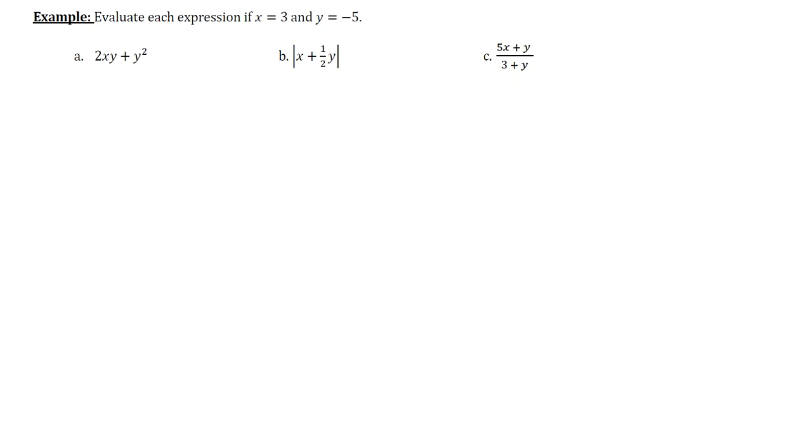The example here says to evaluate each expression if x is equal to 3 and y is equal to negative 5. So basically, what that means is anywhere you see x, you'll change it to 3, and anywhere you see y, you'll change it to negative 5. So let's go ahead and start with example part A.